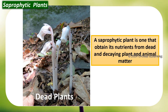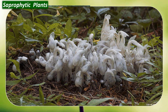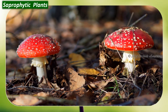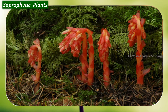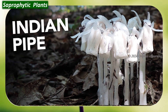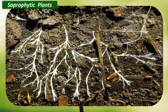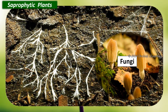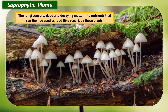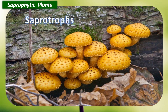A saprophytic plant obtains its nutrients from dead and decaying plant and animal matter. It is usually whitish, though some plants can have brightly colored flowers, and these plants often have no leaves at all. They often grow in deep shade in tropical forests. Examples are Indian pipe and coral root. The roots of saprophytic plants contain organisms called fungi, which convert dead and decaying matter into nutrients such as sugar that can be used by these plants. Fungi are also called saprotrophs.